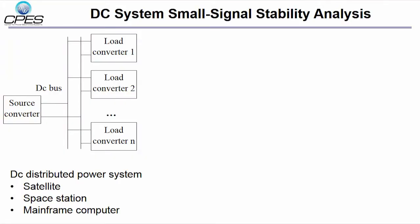First, let's review the impedance-based stability analysis for DC power systems. DC distributed power systems are widely used in industry. Regulated power converters are constant power loads.